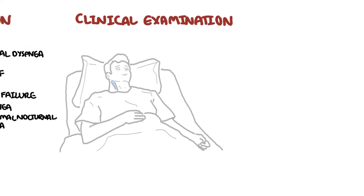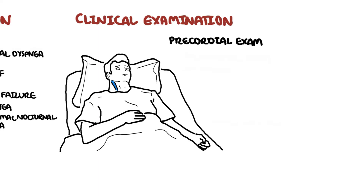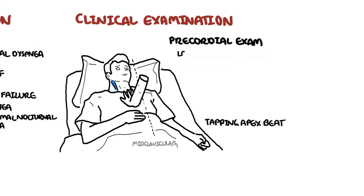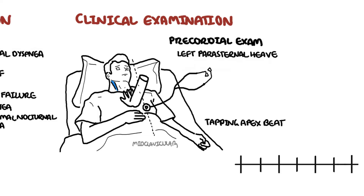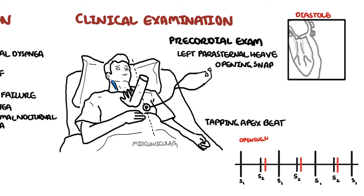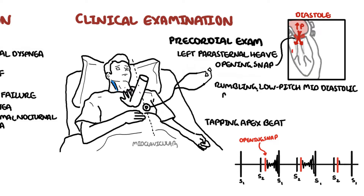On clinical examination, the precordial exam reveals a tapping apex beat in the 5th intercostal space in the mid-clavicular line. There can be a left parasternal heave, indicating right ventricular enlargement. On auscultation, there is an opening snap caused by opening of the stenotic mitral valve, indicating pliable leaflets. This is followed by a rumbling, low-pitch, mid-diastolic murmur, heard best in the left lateral position on expiration. The murmur is louder by increasing flow, such as performing sit-ups or jumps.